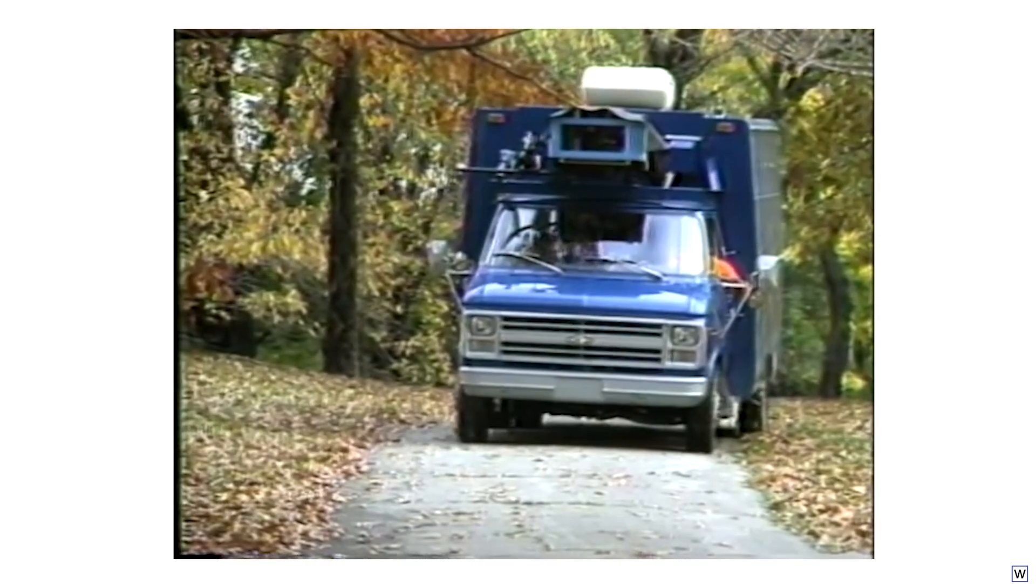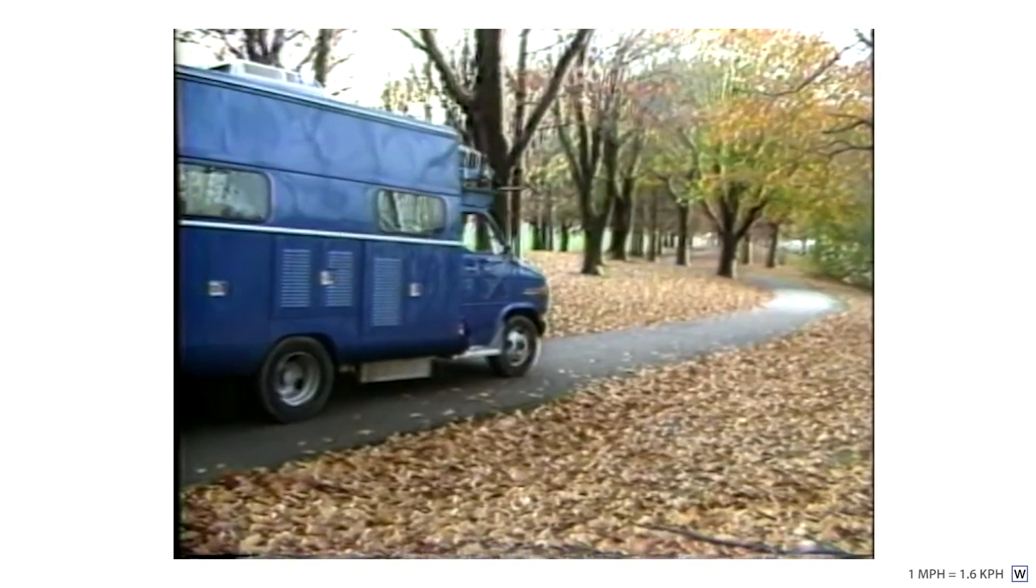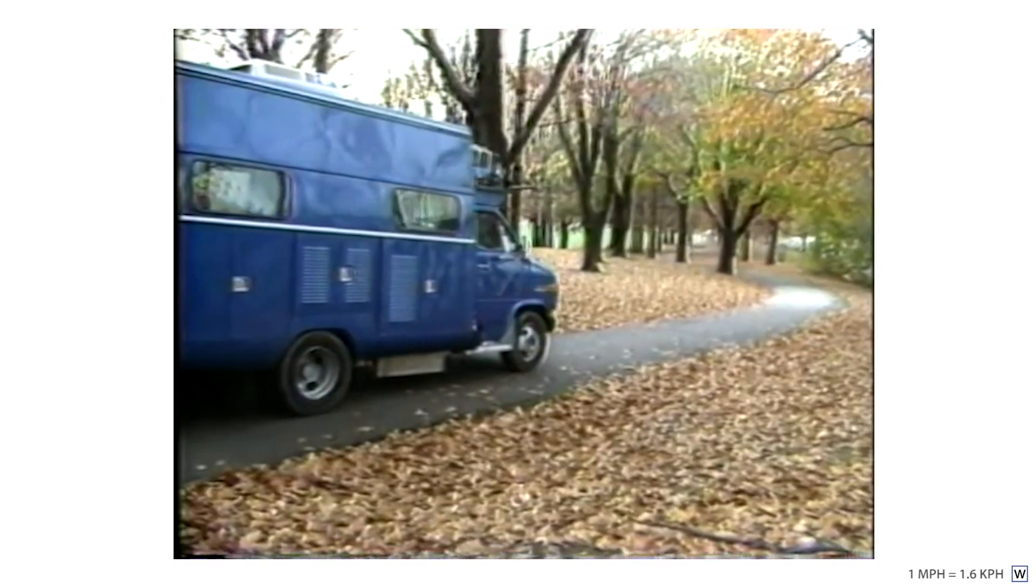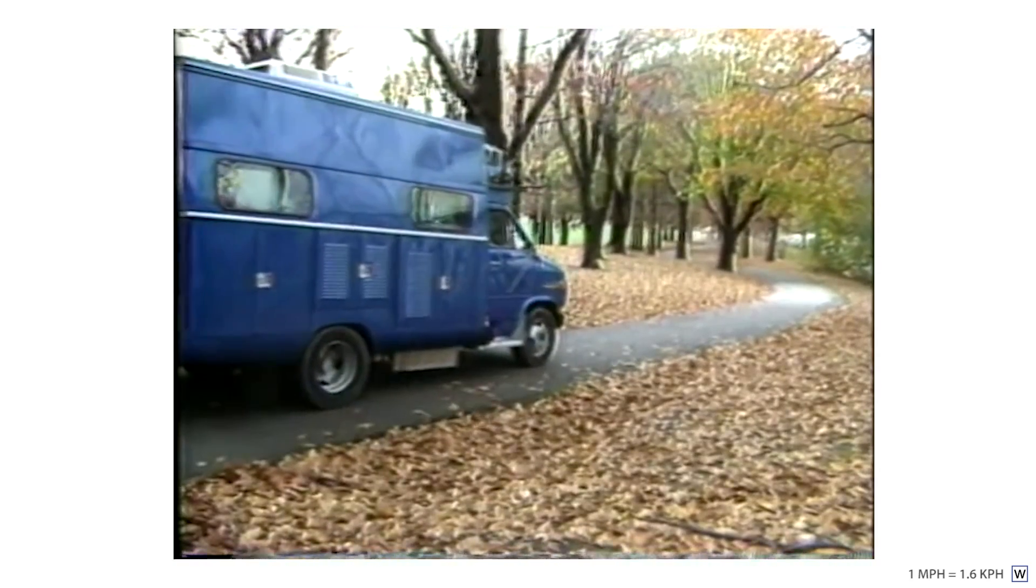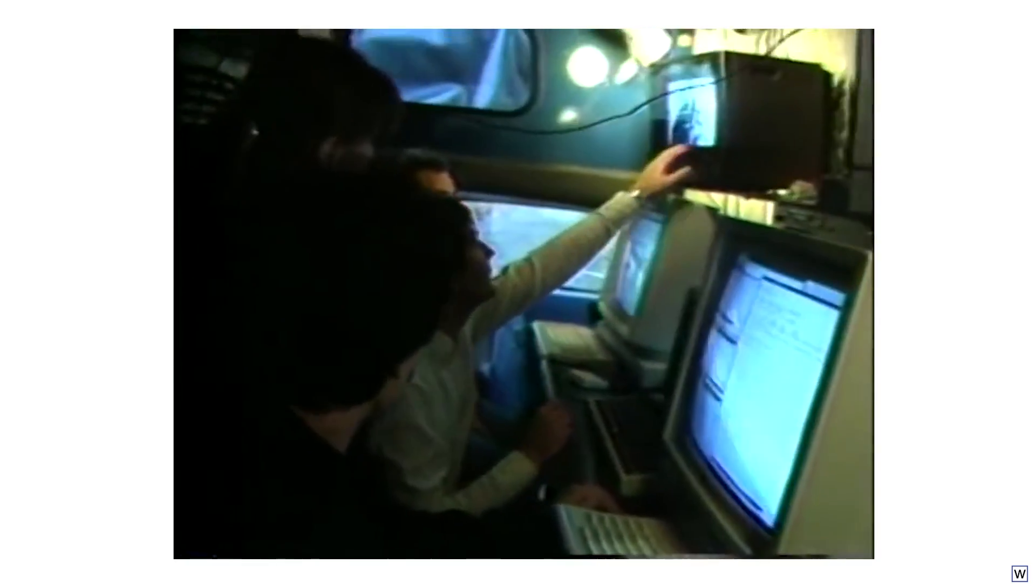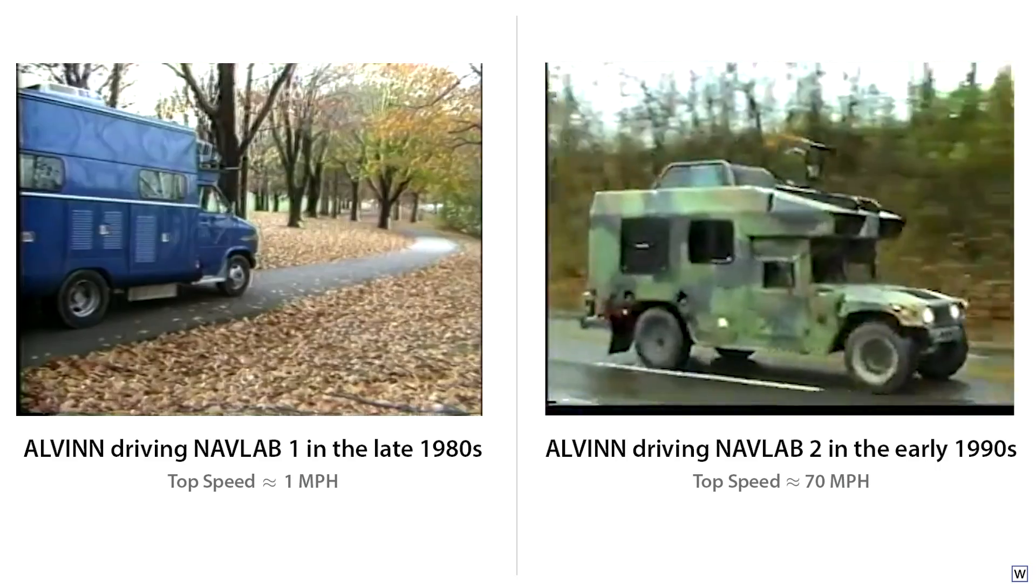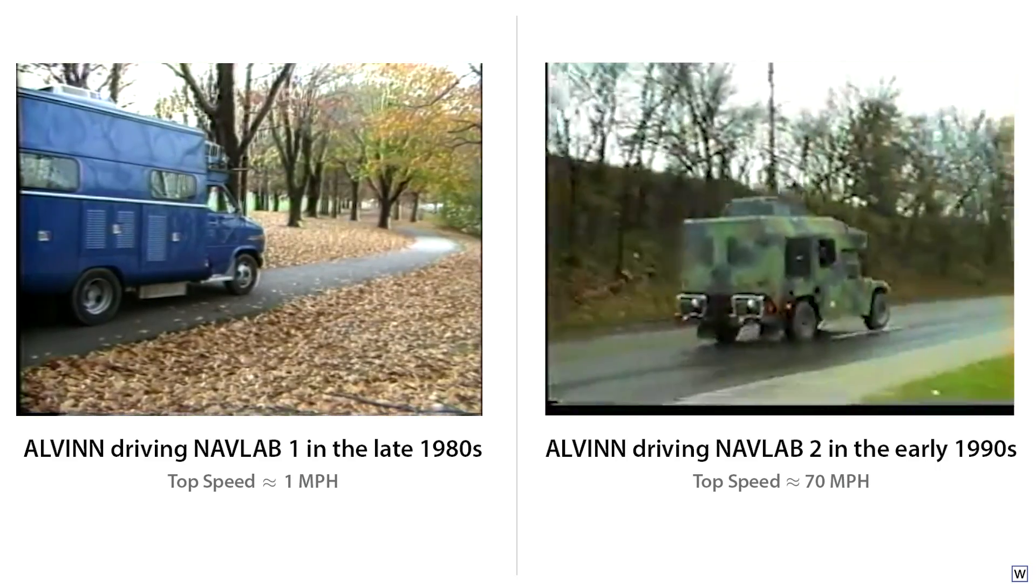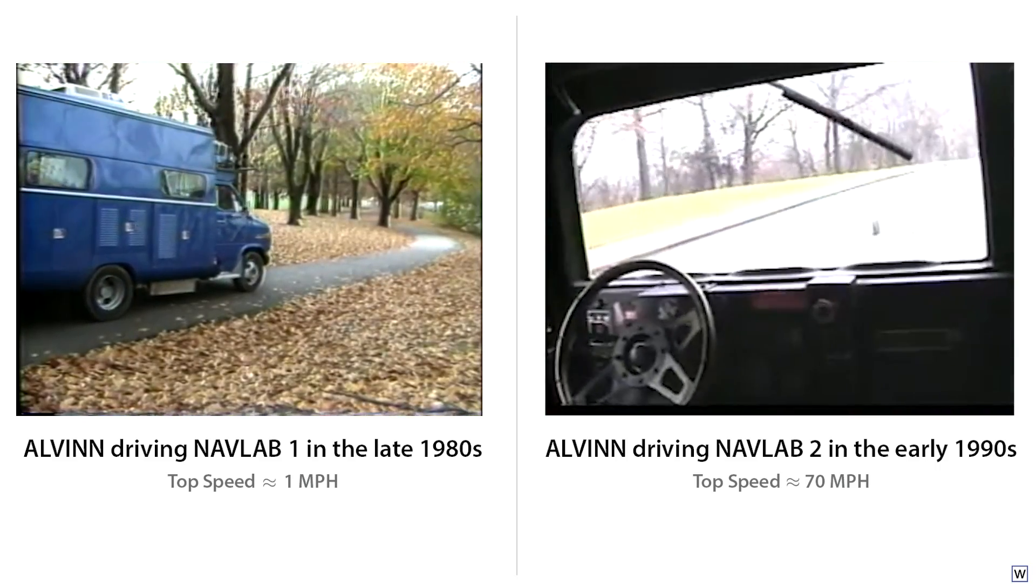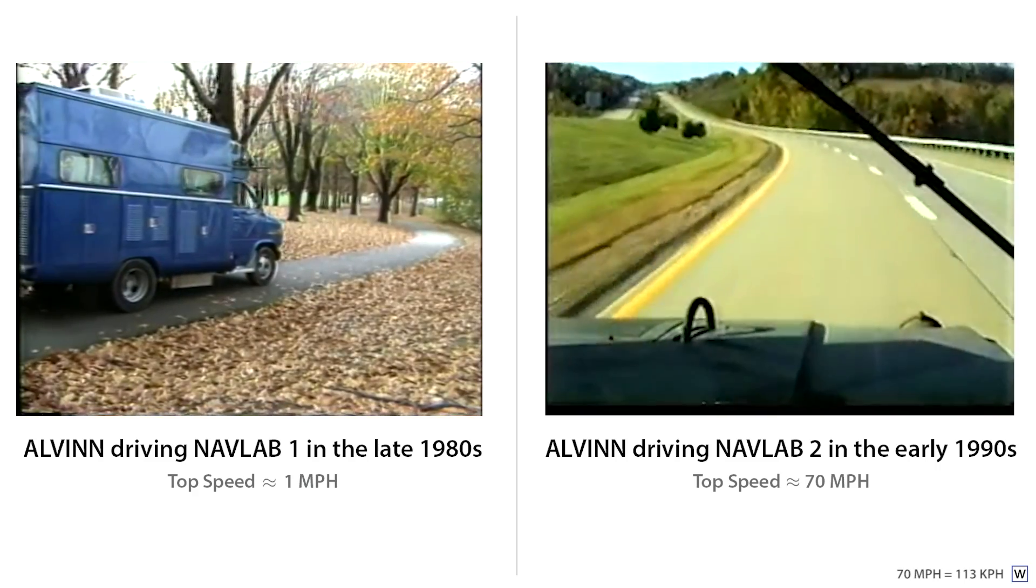Alvin successfully drove the NavLab vehicle at Carnegie Mellon, however initially only at a top speed of about one mile per hour, due to the time required to compute new steering angles as images came in. This slow speed did give the nice advantage of allowing graduate students to write and improve code in the back of NavLab as it drove. And within a few years, thanks to computational speed ups, Alvin was able to drive the second generation CMU vehicle, the NavLab 2, at speeds of up to 70 miles an hour across various terrains.